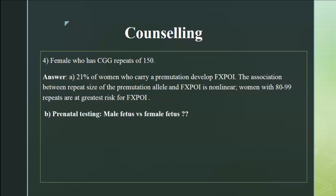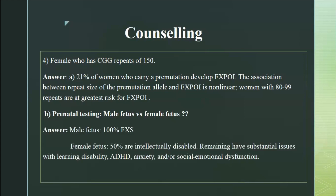For prenatal testing when a mother is a pre-mutation carrier: a male fetus will definitely be affected with Fragile X syndrome. For a female fetus, there is a 50 percent chance of mild to moderate intellectual disability, and the remaining may have mild learning disability or social-emotional issues. This information has to be communicated to the parents. The investigation of choice is TP-PCR — triplet primed PCR.